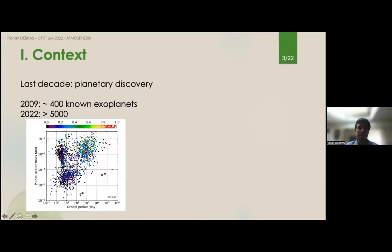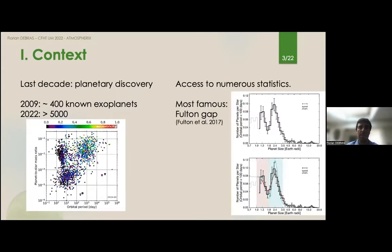Although this study is still ongoing and we are going to more and more difficult targets, we already have access to neural statistics. One of the most famous is what's called the Fulton Gap which basically shows that there is a dip in the number of planets with a certain size, and this dip is associated to the presence or absence of a large atmosphere.